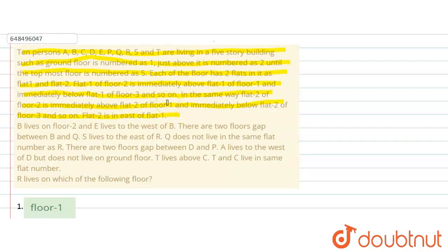So, this is how flats are arranged. Given that B lives on second floor and E lives to the west of B. There are 2 floors gap between B and Q. S lives to the east of R. Q does not live in the same flat number as R. There are 2 floors gap between D and P. A lives to the west of D but doesn't live on ground floor. T lives above C. T and C live in the same flat number. R lives on which of the following floor.